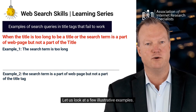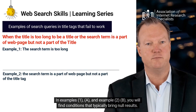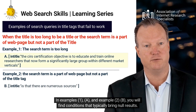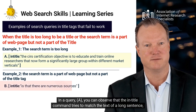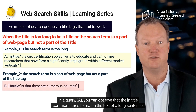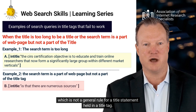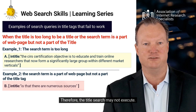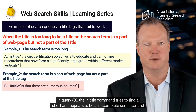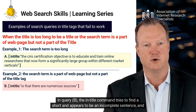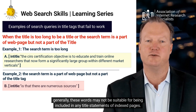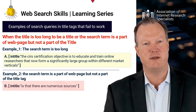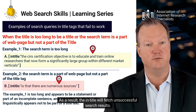Let us look at a few illustrative examples. In Examples 1A and 2B you will find conditions that typically bring null results. In query A, you can observe that the intitle command tries to match the text of a long sentence, which is not a general rule for a title statement held in a title tag. Therefore, the title search may not execute. In query B, the intitle command tries to find a short and apparently incomplete sentence, and generally these words may not be suitable for being included in any title statements of indexed pages. As a result, the intitle will fetch unsuccessful search results.